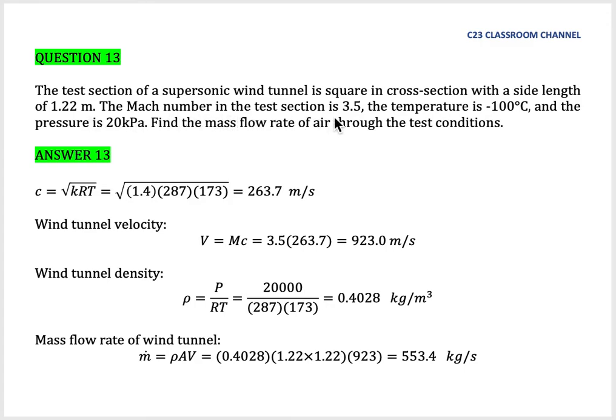The Mach number in the test section is 3.5. The temperature is minus 100 degrees Celsius and the pressure is 20 kPa. Find the mass flow rate of air through the test conditions.